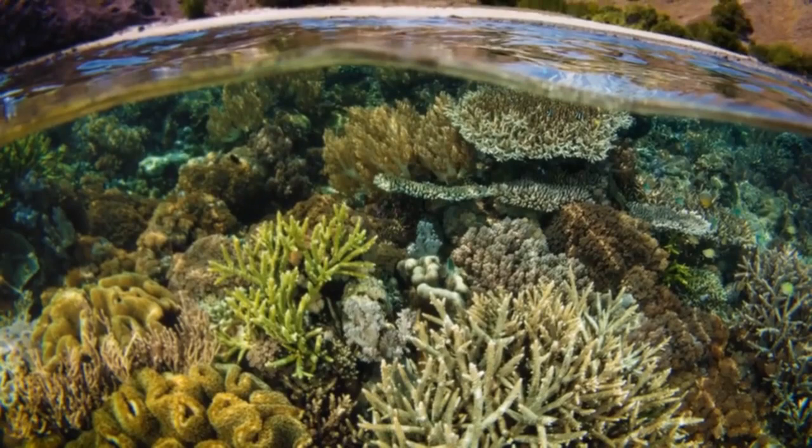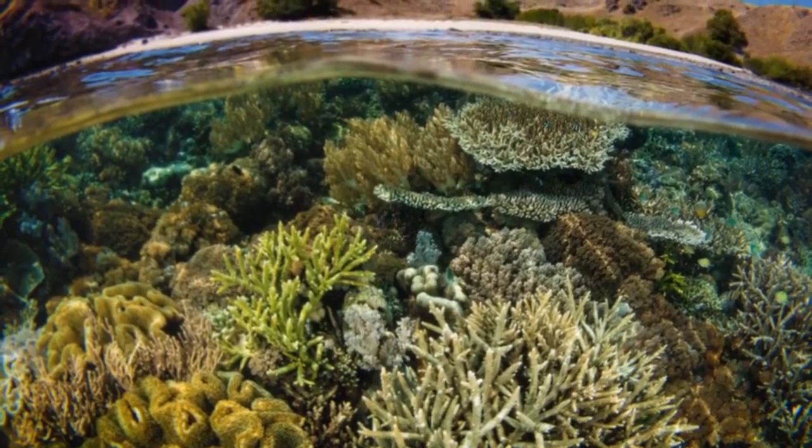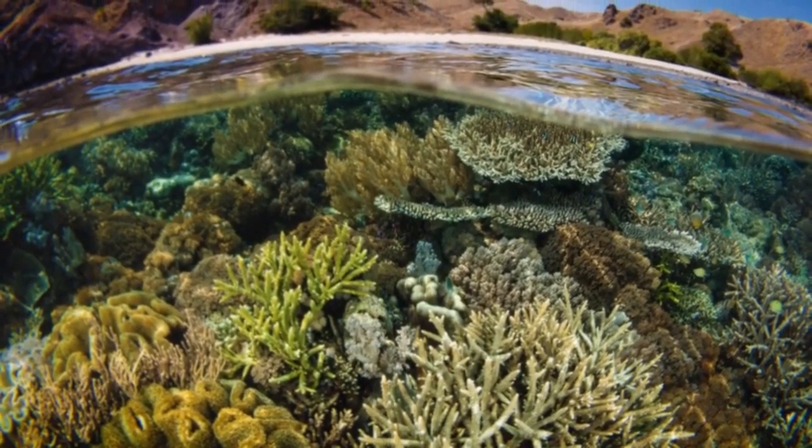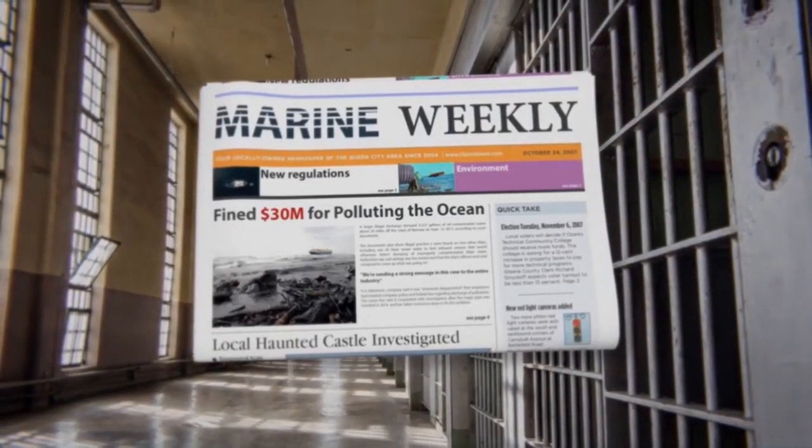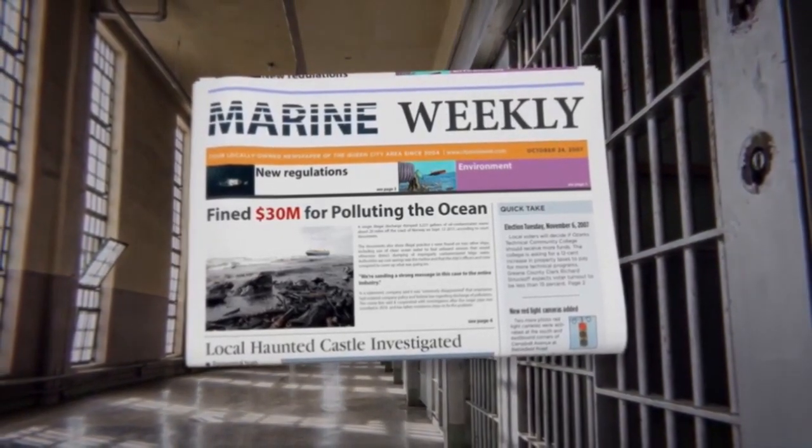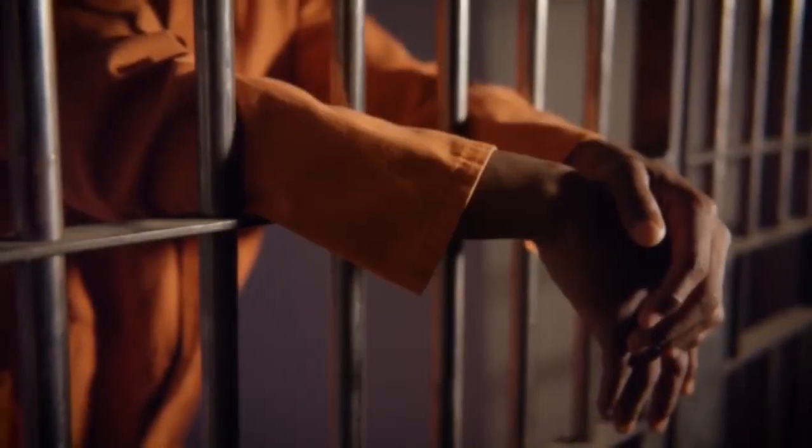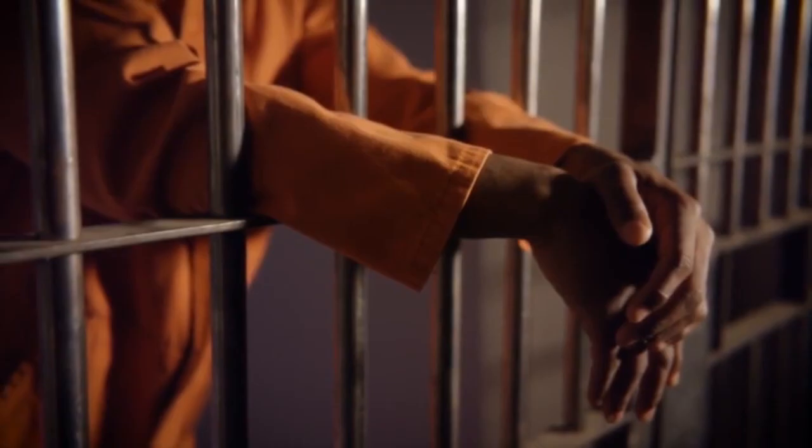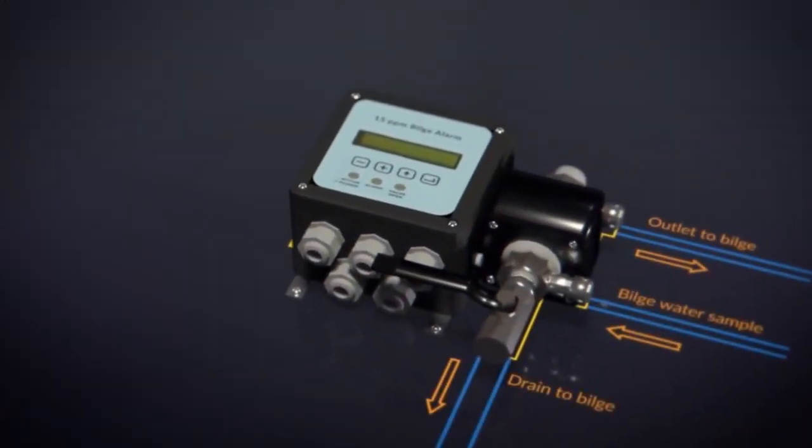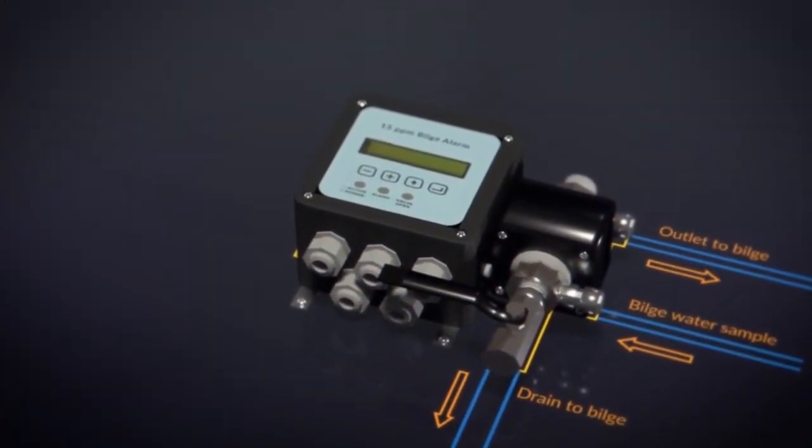Accurate monitoring of the water we are discharging into the seas is important due to environmental and legal reasons. Practices like the magic pipe are immoral and illegal. They have led to prosecutions, jail sentences, and heavy fines. A 15 ppm bilge alarm must be accurate to within plus or minus 5 ppm.